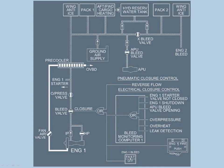This diagram is important — it is a description of the pneumatic system. Considering engine one, it is normally from the IP stage, and in case of low speed the HP valve opens and the HP stage comes into the picture. The bleed valve is the most important valve here. Closing criteria for the bleed valve: it will close if there is a reverse flow, or if there is electrical closure via the BMC, or if the starter valve is not closed, or if the engine is shut down.